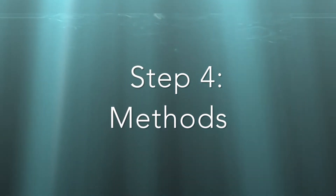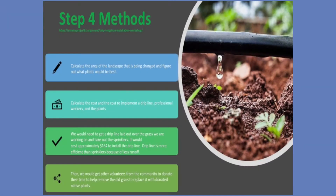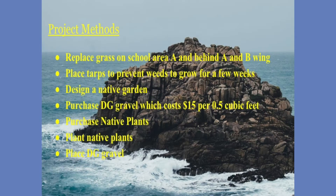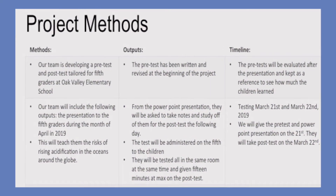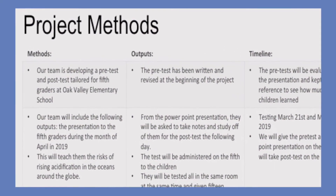Step 4, the method. This is the step where you'll explain how you plan on reaching your smart objectives. In this step, you will explain how you plan to implement the changes and what specific measures you want your school to adopt.